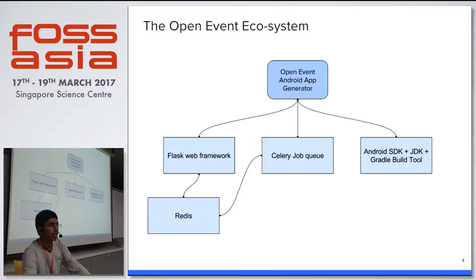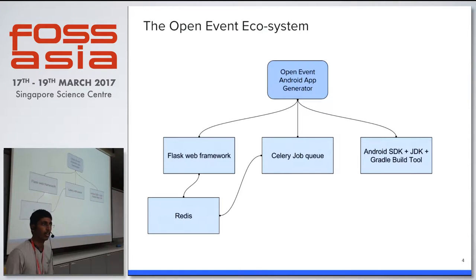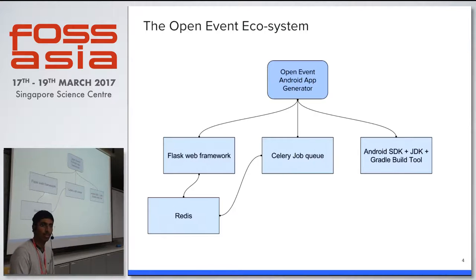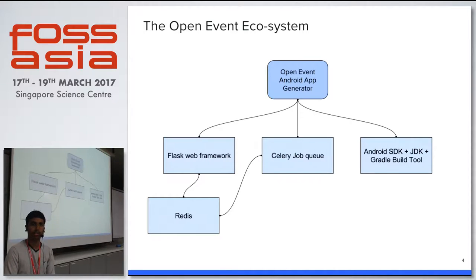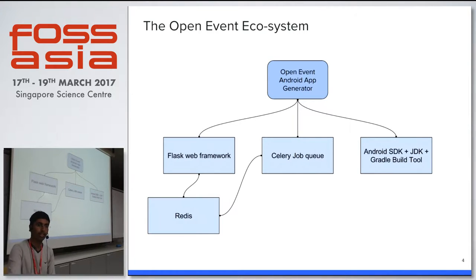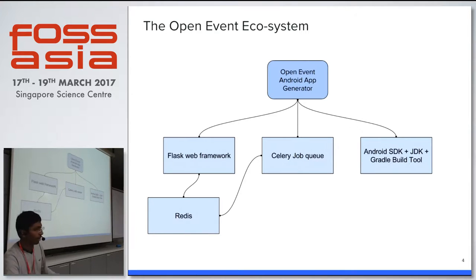The Android app generator has all these components. We have a Flask web framework which provides the web interface for using the generator, which Mario showed a preview of some time back. Then we use the Android SDK to build the actual final APK. We have a Celery job queue because when a lot of people want to build multiple Android applications, we don't want all that happening at the same time and crashing the server. Compiling an Android application takes up a lot of processing power. Once we start getting a lot of load, we may want to run parallel queues to process multiple Android application jobs in parallel on different servers. The communication between the web framework and the job queue is handled by Redis, which acts as the data bridge between both of them.